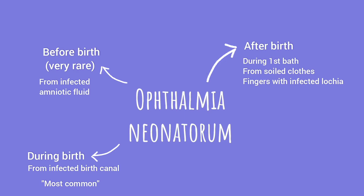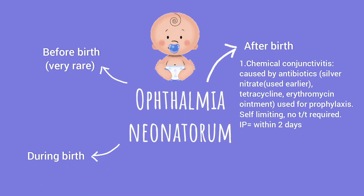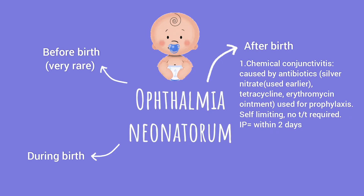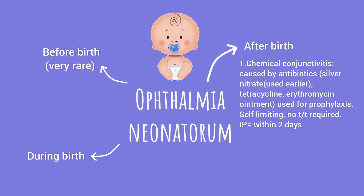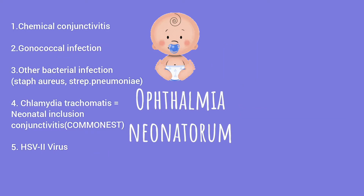Let's look at the causative agents. Chemical conjunctivitis is caused by the antibiotics used as prophylaxis into the eyes of the baby immediately after birth, to prevent bacterial and Chlamydial Ophthalmia Neonatorum. It occurs within 2 days and does not require any treatment as it is self-limiting.